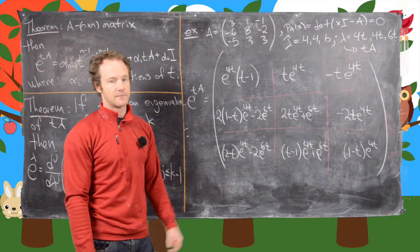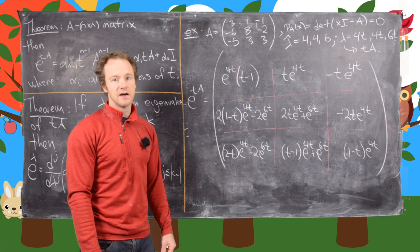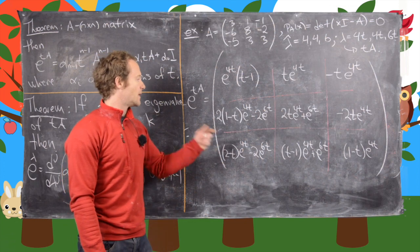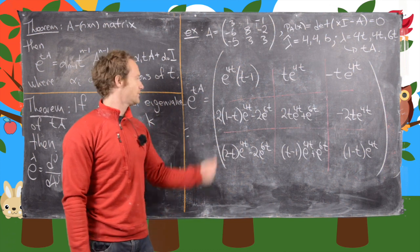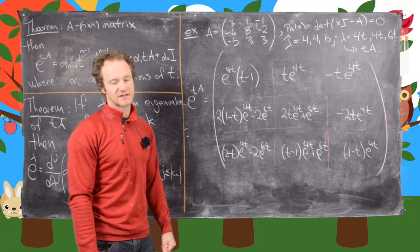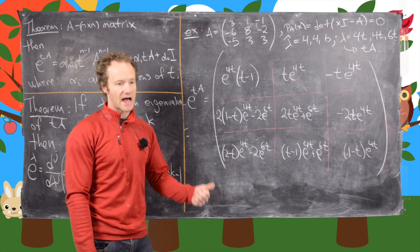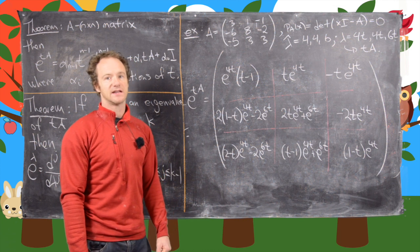this is what you get. So I won't read off all of these because they're all just functions of t, and I'll let you just look at them and write them down. But this is a nice simple way of calculating the matrix exponential. It requires a little bit of work, but it doesn't require you to diagonalize or find the Jordan canonical form. Okay, that's the end of this video.